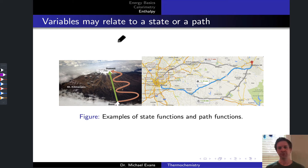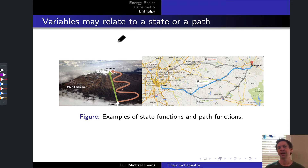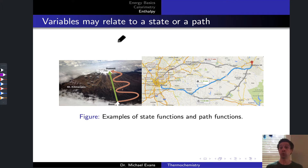In this video, we're going to talk about the difference between state variables and path variables in thermodynamics. To begin, I want to start with a very basic characterization of what we're trying to do in applying thermodynamics. The basic idea is we've got some system, there's a boundary around that system, and everything else in the universe is the surroundings — whatever we've decided to call the universe, assuming nothing else outside our little bubble matters.